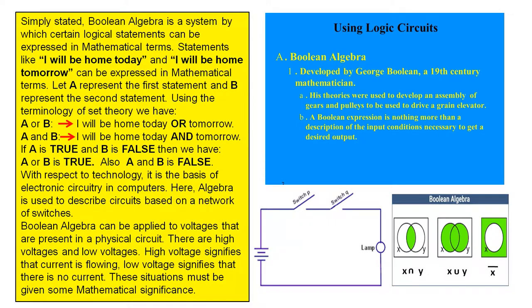If A is true and B is false then we have A or B is true, also A and B is false. With respect to technology, it is the basis of electronic circuitry in computers.